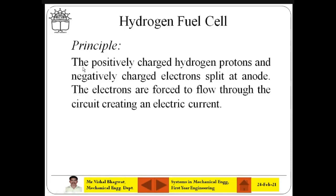What is the principle here? Basically, the positively charged hydrogen protons and negatively charged electrons split at the anode. There are oxidation reactions at the anode and cathode. At the anode, the hydrogen protons and electrons are split — the electrons are forced to flow through the circuit, creating an electric current.